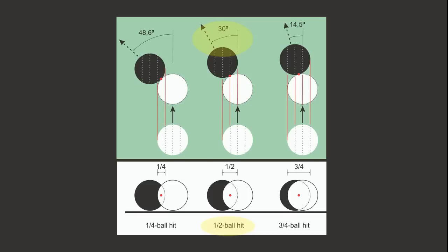Shots close to a half ball hit are very common in typical gameplay because the angle is not too large to make the shot too difficult, and yet the angle is large enough to allow a wide range of cue ball control options.